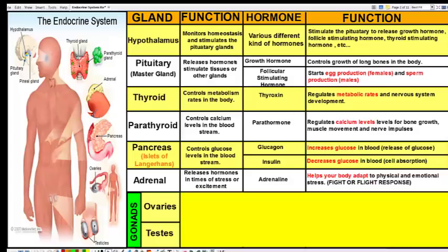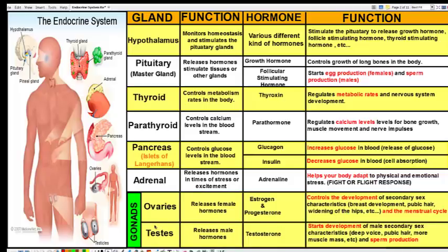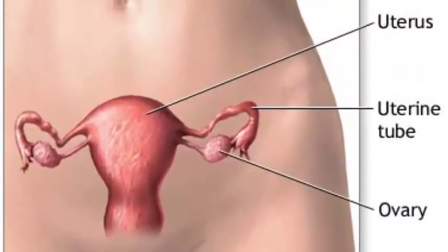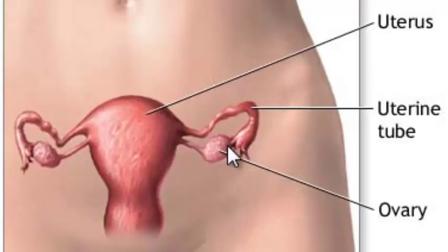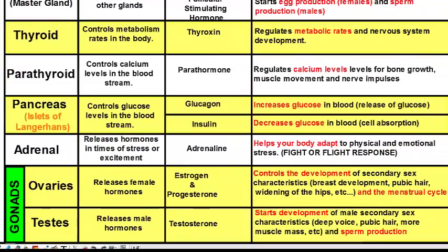The last group of glands are called the gonads. Males and females have different gonads. The ovaries are located in the female reproductive structure at the end of the fallopian tubes. The ovaries produce the hormones progesterone and estrogen, which control the development of secondary sex characteristics. As females hit puberty, changes include breast development, pubic hair, widening of the hips, and the start of the menstrual cycle — all getting the body ready for reproductive purposes.